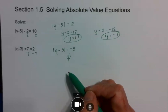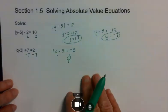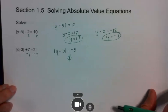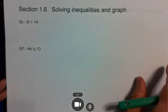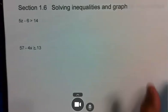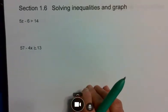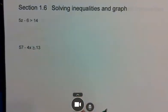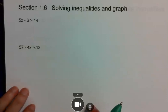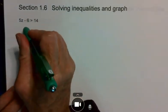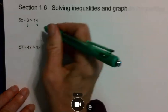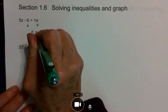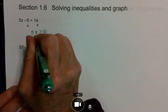Section 1.6 has to do with solving inequalities and graphing. The rules for solving inequalities are basically the same as equations, except if you multiply or divide by a negative number, you have to switch the direction of the inequality. Let's go ahead and do this one. I'm going to add 6 to both sides. That's going to give me 5z is greater than 20.